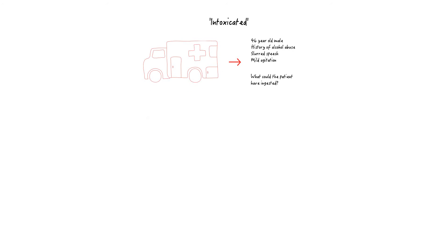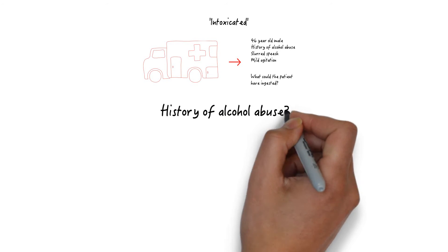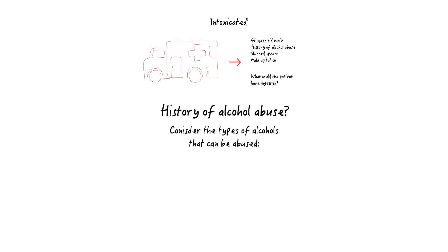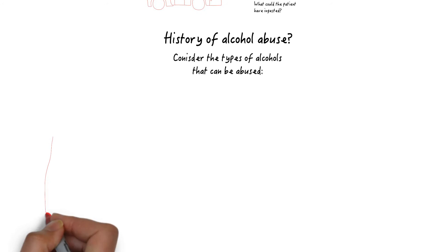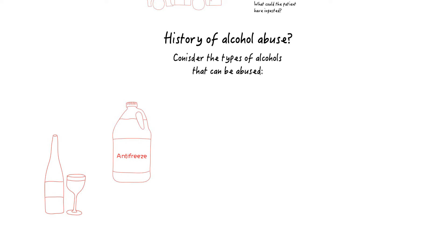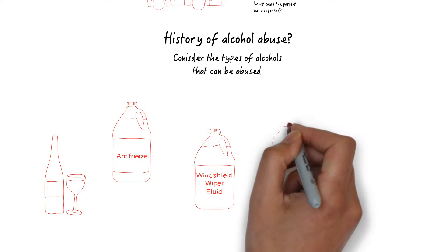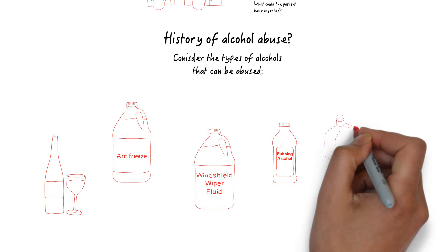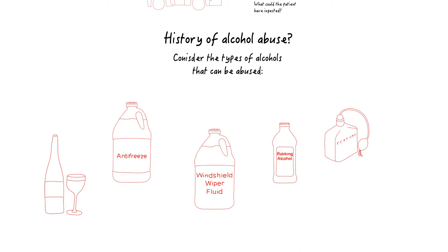You are concerned about the patient's history of alcohol abuse and realize you need to consider the types of alcohols the patient may have abused, including ethanol, ethylene glycol, methanol, and isopropyl alcohol. Keep in mind that alcoholics without access to traditional sources of alcohol may obtain ethanol in alternative products like perfumes, hand sanitizers, and cooking extracts.